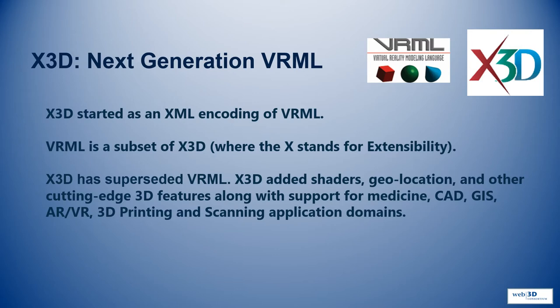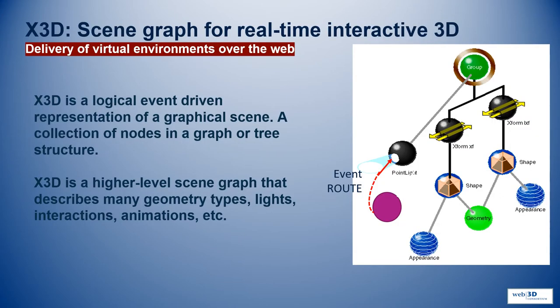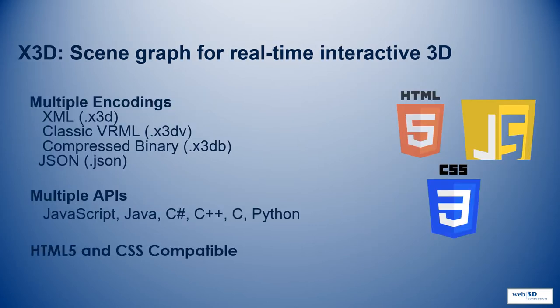X3D is being used in business-critical applications and in different domains. X3D is a scene graph for real-time interactive 3D — a high-level scene graph that describes many geometry types, lights, interaction, animation, and more. It's a logical event-driven representation of graphical scenes, a collection of nodes in a graph or tree structure. There are multiple encodings available: XML, classic VRML, compressed binary, and JSON, with multiple APIs from JavaScript to Python. And it's HTML5 and CSS compatible.